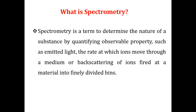What is spectrometry? Spectrometry is a term used to determine the nature of a substance by quantifying some observable property, such as emitted light, the rate at which ions move through a medium, or the backscattering of ions fired at a material into finely divided particles. This is the general definition of spectrometry, and we will see a simplified explanation next.